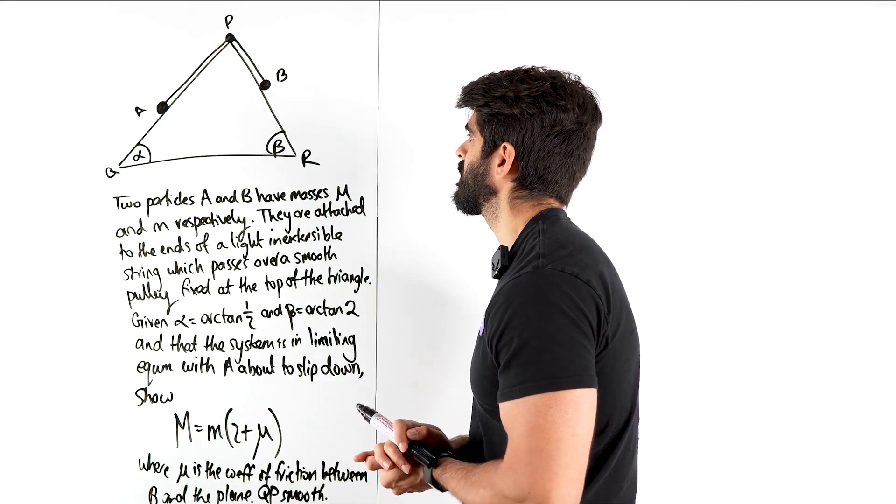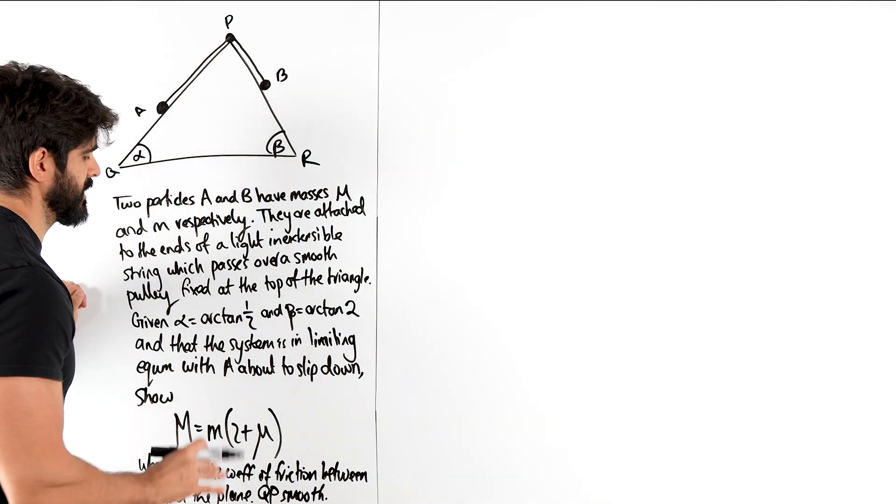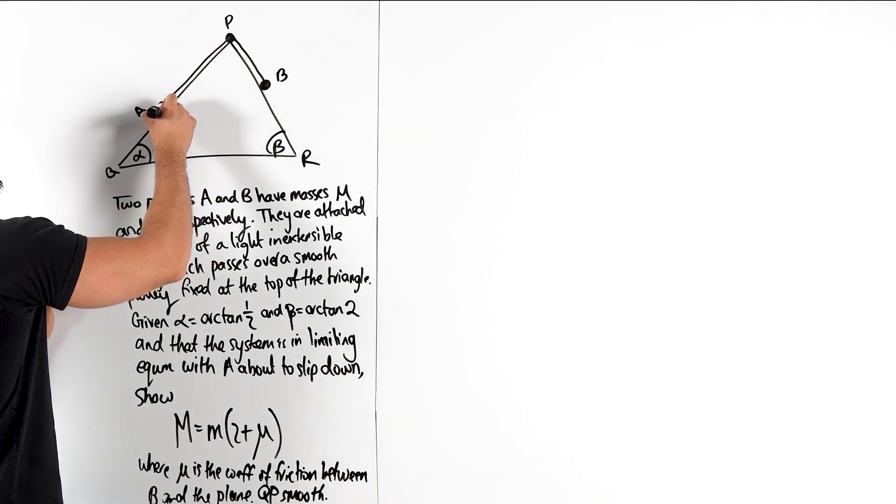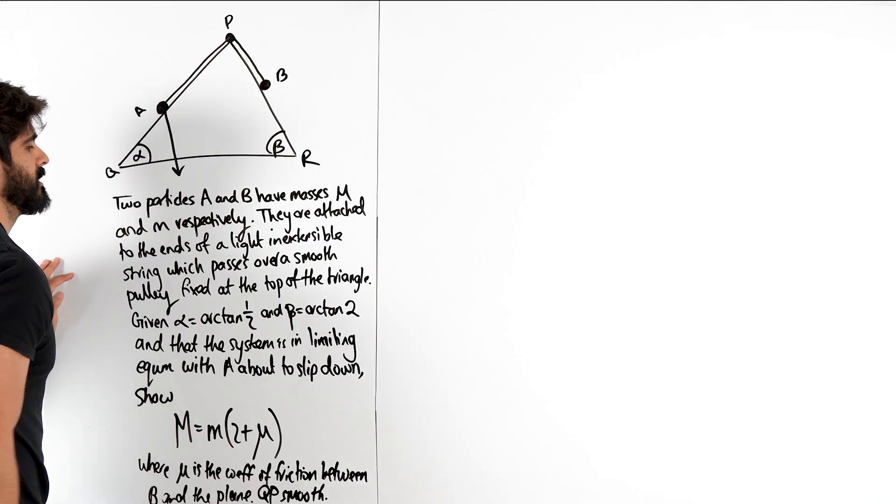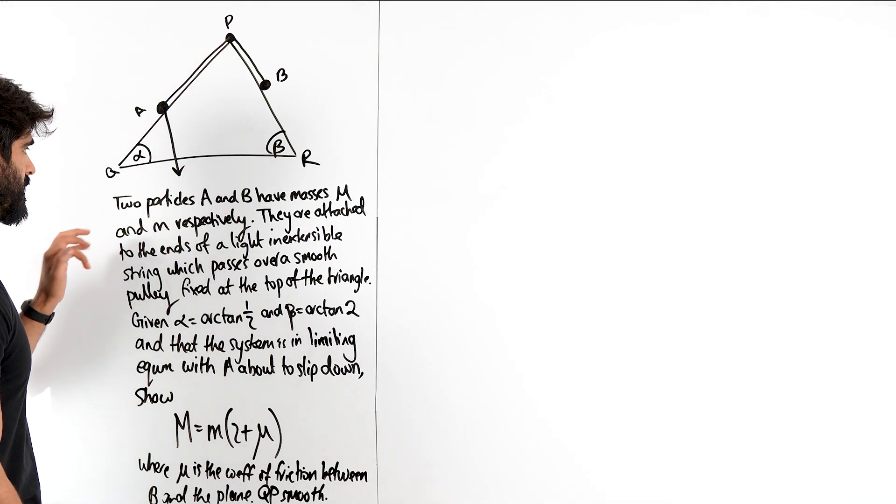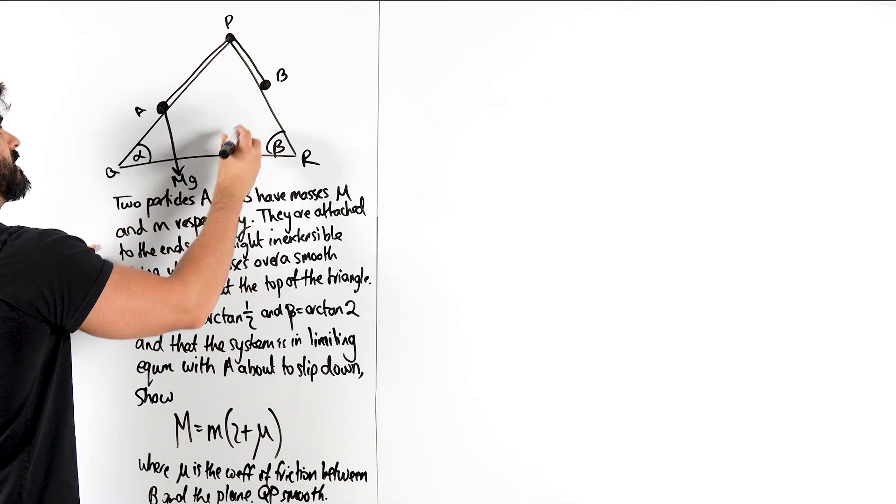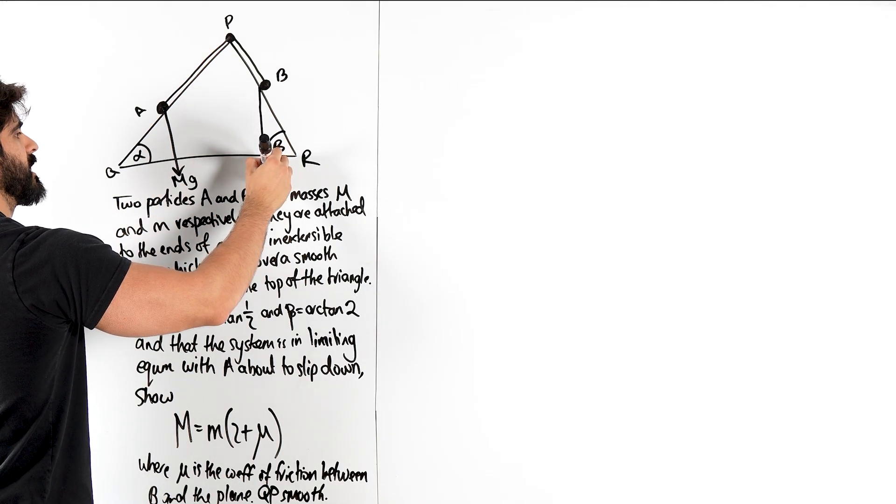So basically saying that this surface here is rough. We basically just go about the same process. It looks intimidating but really guys it's quite a simple question. It's all about making hard questions look easy. So we have two particles A and B have masses capital M, so we're going to have capital MG and then for B we're going to have lowercase MG.